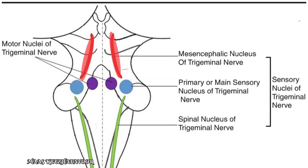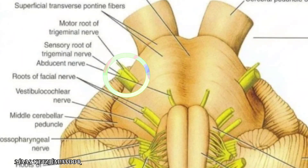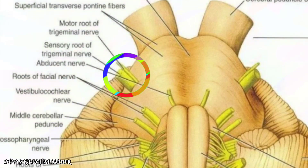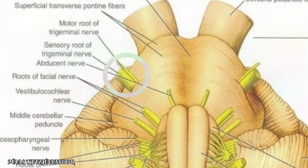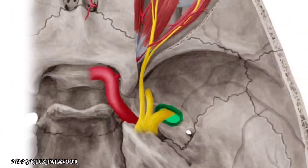The sensory nuclei of the trigeminal are the mesencephalic nucleus, chief sensory nucleus, and spinal nucleus. The trigeminal nerve emerges as two roots — a larger sensory and a smaller motor — from the junction of the pons with the middle cerebellar peduncle.